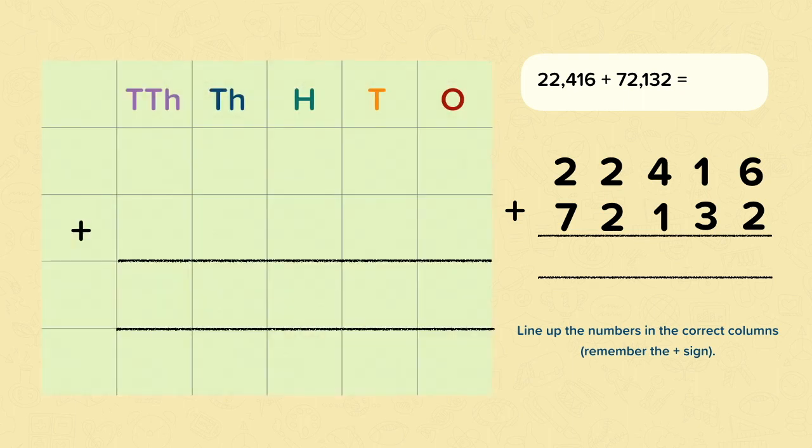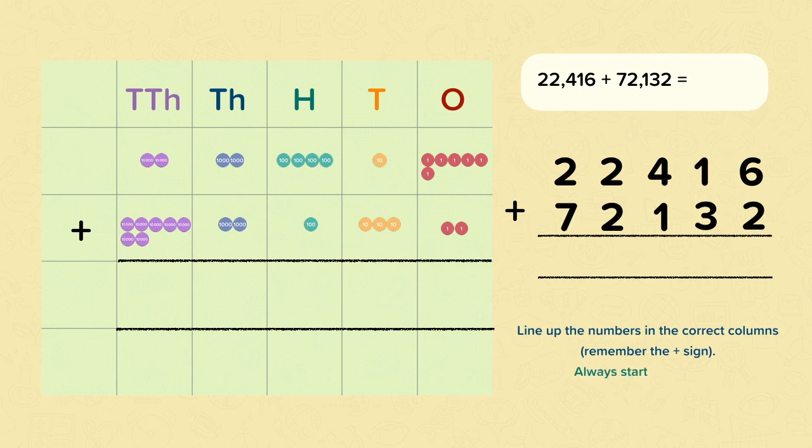We're going to use counters to help us solve this calculation. So here it is, represented with place value counters. We must remember that when we're using the column method, we must always start at the ones. So we've got six ones and we've got to add two ones. So six add two is eight.